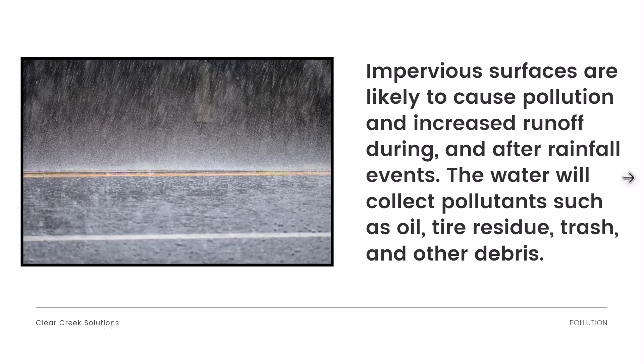Impervious surfaces are likely to cause pollution and increased runoff during and after rainfall events. The water will collect pollutants such as oil, tire residue, trash, and other debris. Specifically when water moves across impervious surfaces — a highway roadway would be a great example — that's going to be an area where a lot of pollutants collect because there are vehicles, cars, animals, and it's outdoors, making it easy for water to accumulate dangerous chemicals.